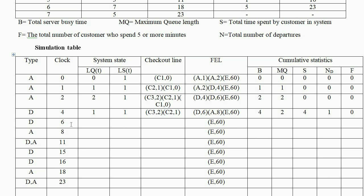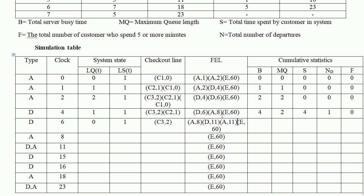At clock time 6, customer 2 departs. Customer 3 is now at the checkout line and starts service (Ls=1, Lq=0). The future event list contains arrival of customer 4 at minute 8, departure of customer 3 at minute 11, and arrival of customer 5 at minute 11 — written as A8, D11, and A11.